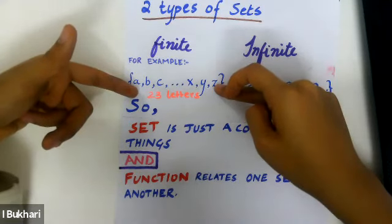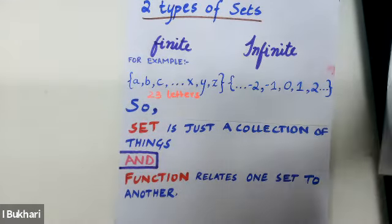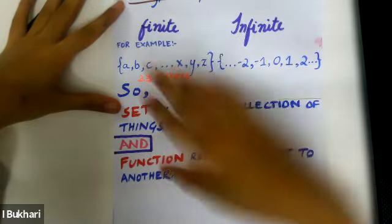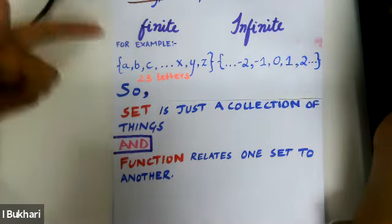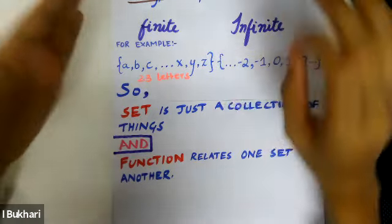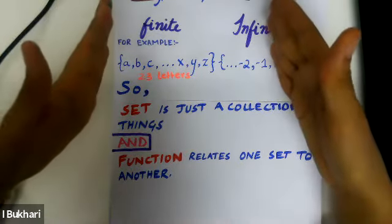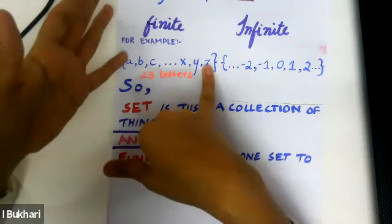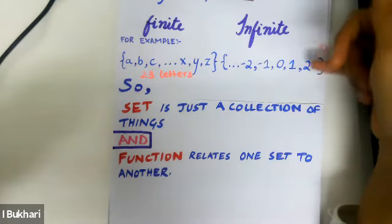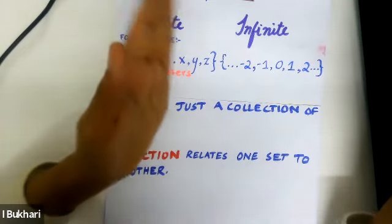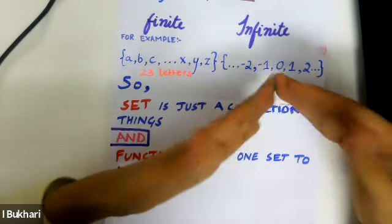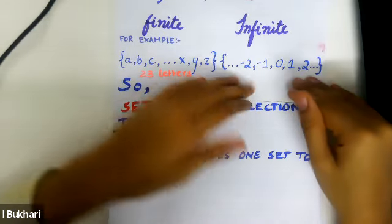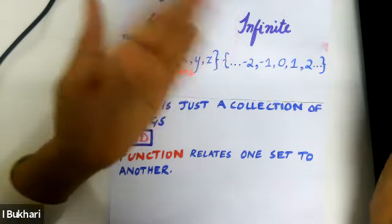A common way to write a finite set uses ellipses — three dots — which are placed in a set when you don't want to write all the elements but mean to include all of them, so from A to Z. For an infinite set, like the set of integers, it could go on forever, so we have ellipses on both sides.